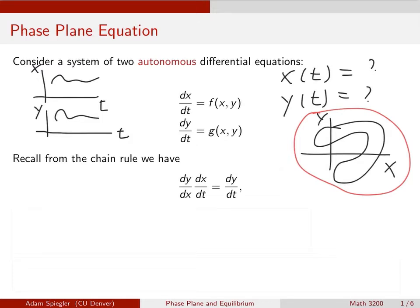Finding the phase plane equation is going to be an application of the chain rule. So just recall what the chain rule says: if I want to figure out what the derivative of y is with respect to t, and I know that y depends on x and x depends on t, then I take the product of the derivative. So we have dy/dx times dx/dt is equal to dy/dt.